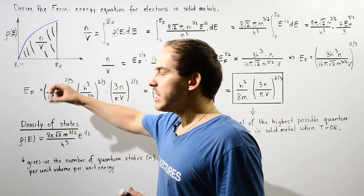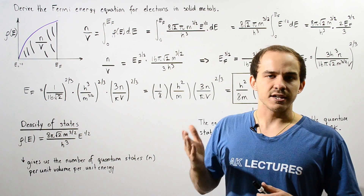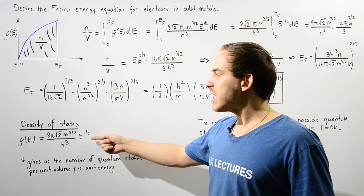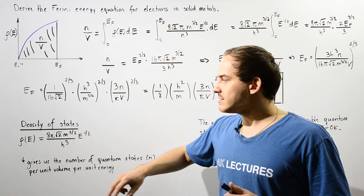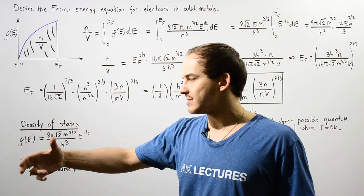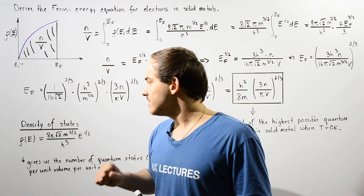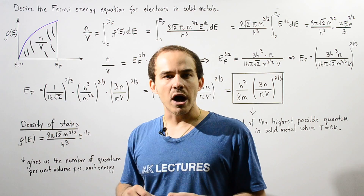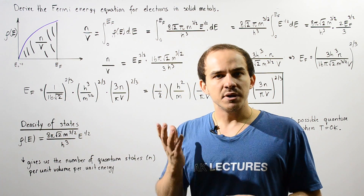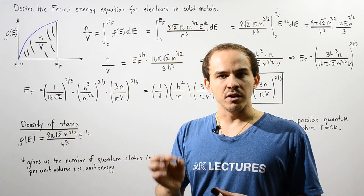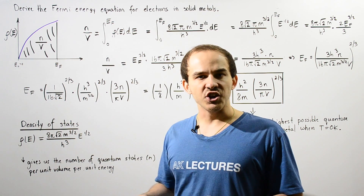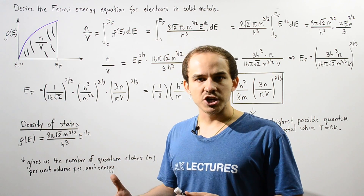We're going to use the density of states function — a mathematical function given by the following equation. Rho, which depends on E, is equal to this entire quantity. This function gives us the number of possible energy quantum states of the electron per unit volume per unit energy.